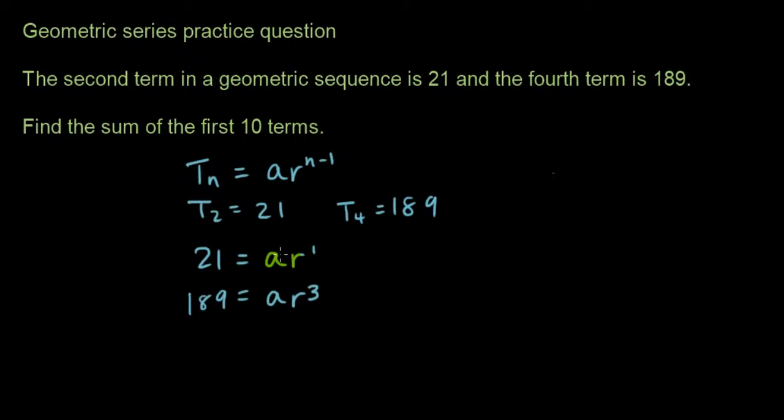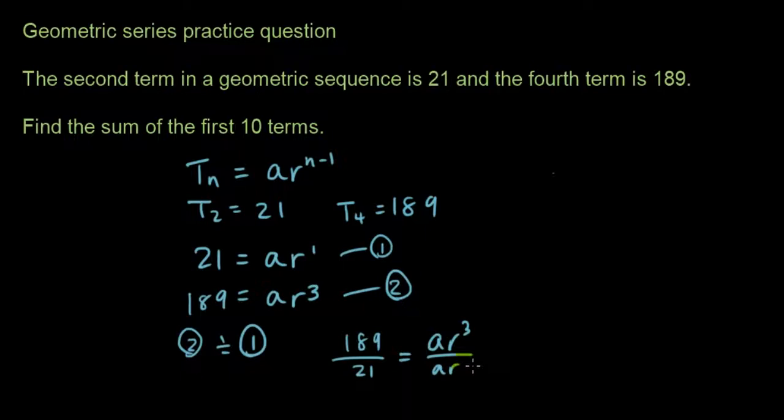Okay, so we need to find out what R is and what A is from these two equations. So we have equation 1 here, equation 2 here, and now let's do equation 2 divided by equation 1. Left-hand side divided by left-hand side, right-hand side divided by right-hand side.